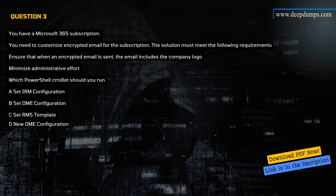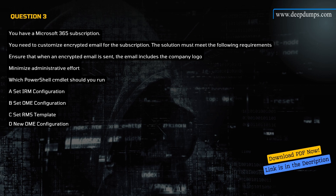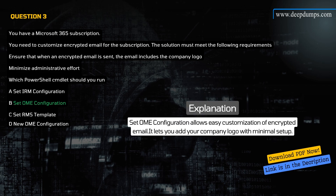Question 3. You have a Microsoft 365 subscription. You need to customize encrypted email for the subscription. The solution must ensure that when an encrypted email is sent, the email includes the company logo, and minimize administrative effort. Which PowerShell cmdlet should you run? A) Set-IRMConfiguration, B) Set-OMEConfiguration, C) Set-RMSTemplate, D) New-OMEConfiguration. Correct answer is B. Explanation: Set-OMEConfiguration allows easy customization of encrypted email and lets you add your company logo with minimal setup.